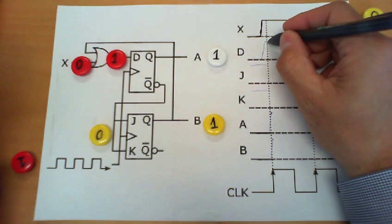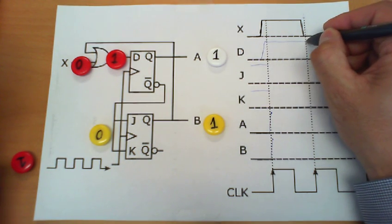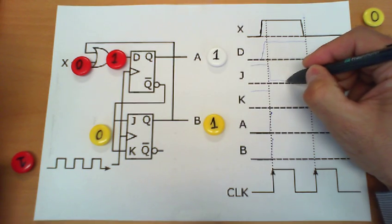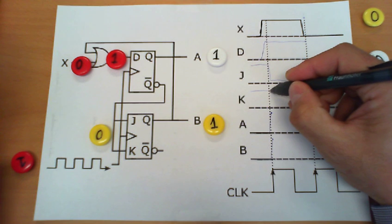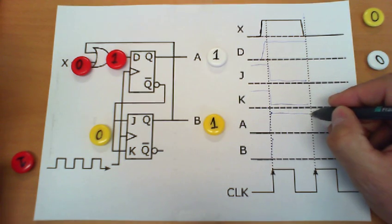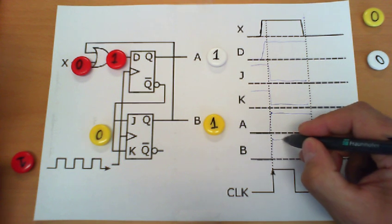So we can reflect this change in here saying that D remains 1. J and K go to 0 and A remains at 1 all the way through here as well as B.